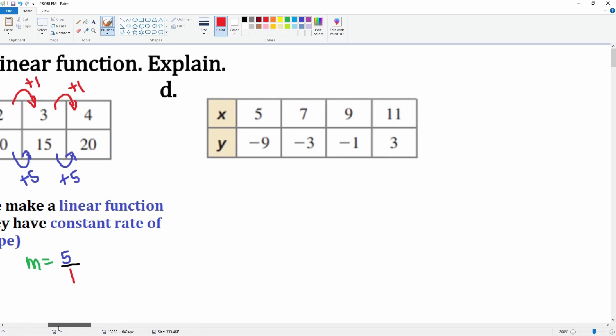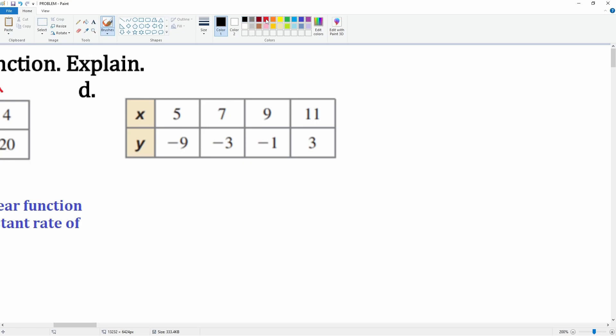Let's look at d here. How's it changing? 5 to 7 is plus 2, 7 to 9 is plus 2, 9 to 11 is plus 2. How do you go from negative 9 to negative 3? You're gonna add 6. How do you go from negative 3 to negative 1? You're adding 2. And then how do you go from negative 1 to 3? You're adding 4.